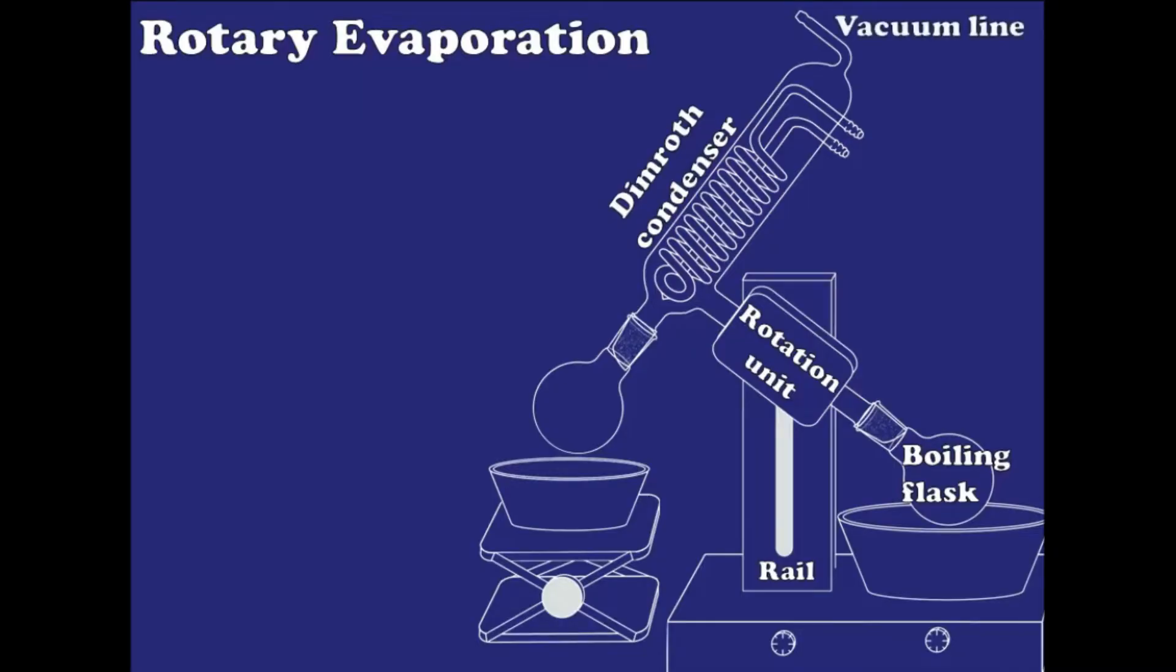You can also find a port for attaching a vacuum line and ports for water lines so you can cool the condenser. What is referred to as the receiving flask in a simple distillation is now called a solvent trap. Another part is a warm water bath for evaporation and an ice bath to keep the collected solvent in liquid phase. Finally, there are dials which control the rotation and the temperature.